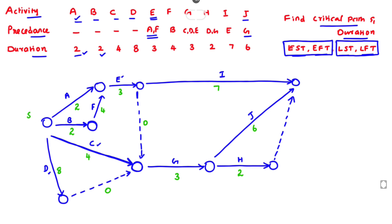Now we identify all paths in the network. Path A–E–I: duration = 2 + 3 + 7 = 12 days. Next path is A–E–G–J.